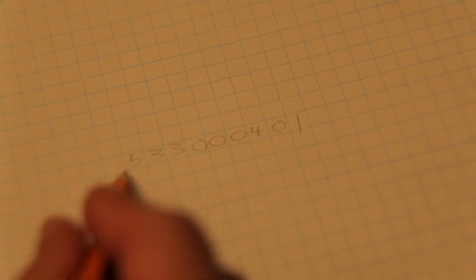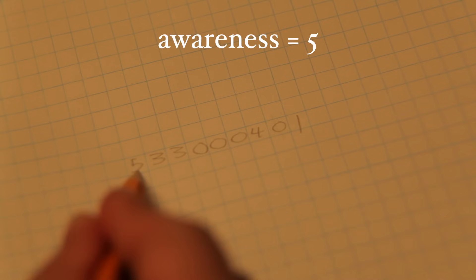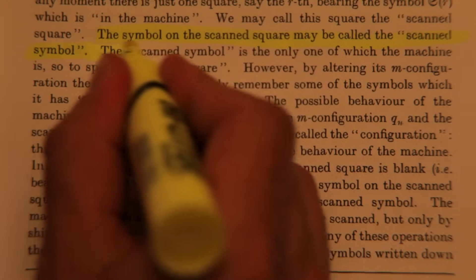And what the person is observing is precisely where their pencil is pointing in the rough work. In our example, it's the first symbol of the input. He calls this their awareness, so they are only ever aware of one symbol.